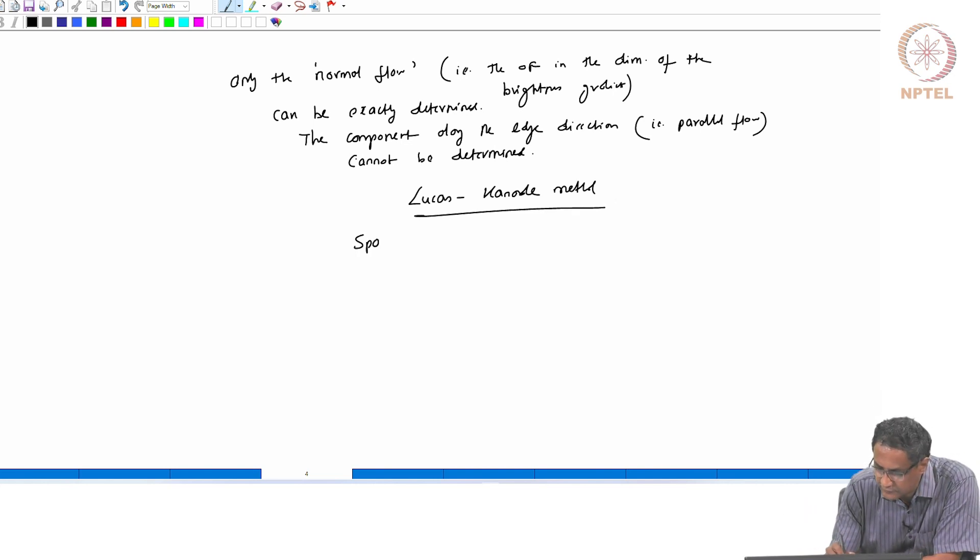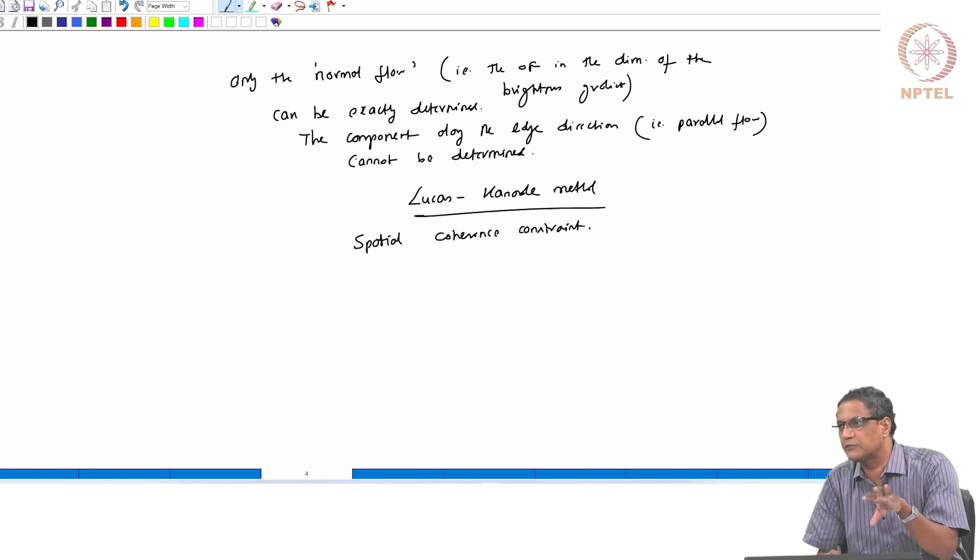It introduces a spatial coherence constraint. In addition to the brightness constancy assumption that we had, now these people bring in a spatial coherence constraint. What that really means is that within a small window, you can assume that your optical flow is roughly the same for all the pixels, which is not such an unreasonable assumption.